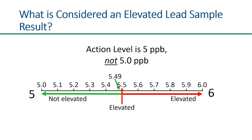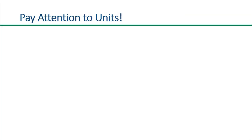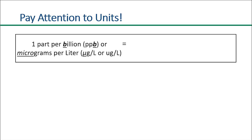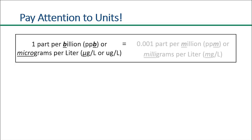It is important to note that labs often report the results in units other than parts per billion. First, parts per billion is equivalent to micrograms per liter. You may see micrograms per liter denoted as µg/L or ug/L. Labs may also report the results in parts per million, which is equivalent to milligrams per liter.